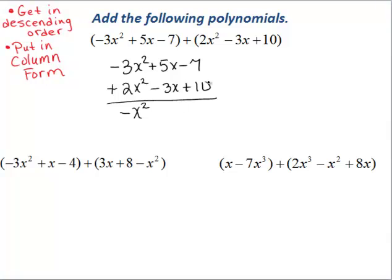Then we have 5x minus 3x, so 5 minus 3 is a positive 2, so we'll write plus 2x. And then we have negative 7 plus 10, which we know to be positive 3. So after putting this in column form, we have our answer: negative x squared plus 2x plus 3.